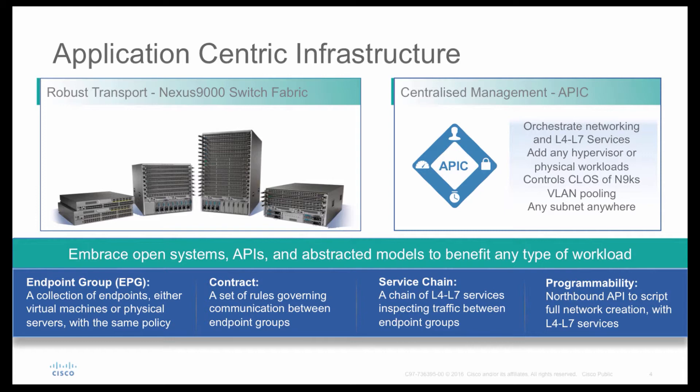APIC can integrate with multiple hypervisors like KVM, VMware, and Hyper-V. In ACI fabric you can run a mix of physical and virtual workloads, and everything is controlled by the APIC controller in the background — VLAN assignment is handled automatically so you don't have to manage long Excel sheets. ACI embraces open systems with open APIs that allow integration with any third-party system capable of using APIs.